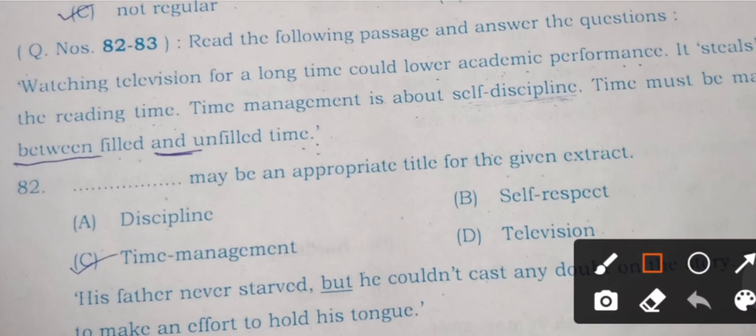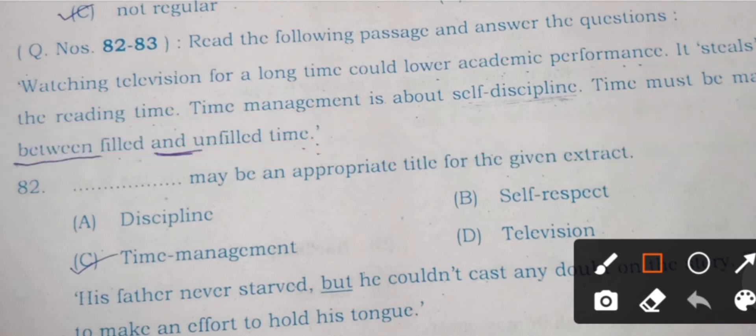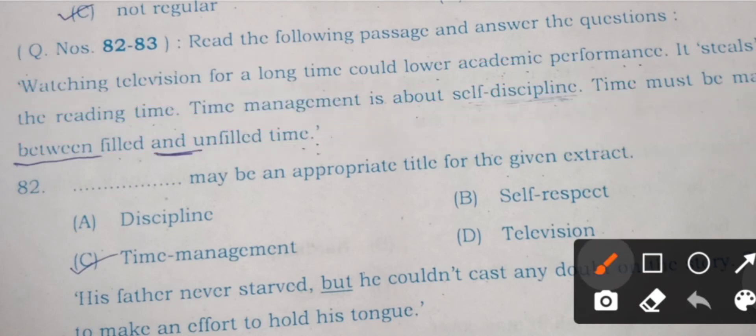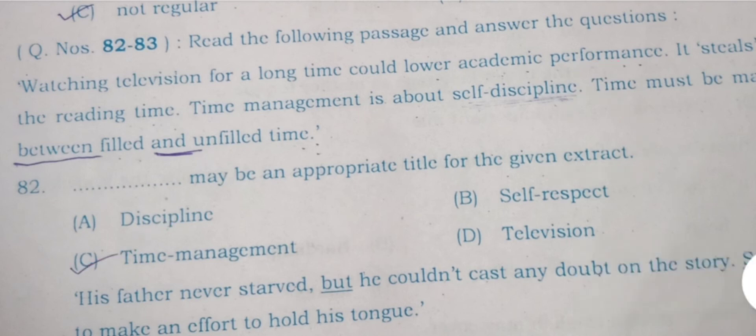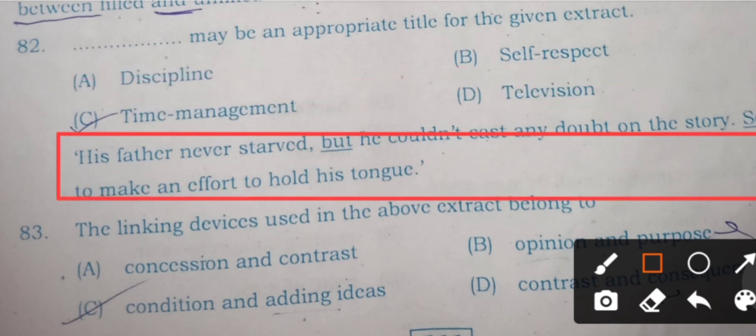Questions 82 and 83 are based on a small paragraph: Watching television for a long time could lower academic performance. It steals away the reading time. Time management is about self-discipline. Time must be managed between filled and unfilled time. Question 82: What may be an appropriate title for the given extract? A) discipline, B) self-respect, C) time management, and D) the television. Here C is the correct answer.